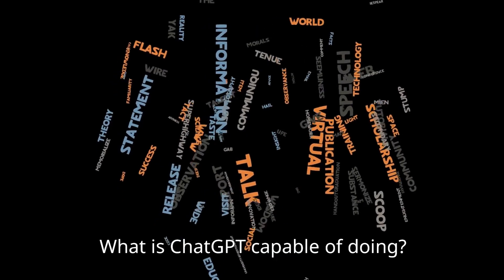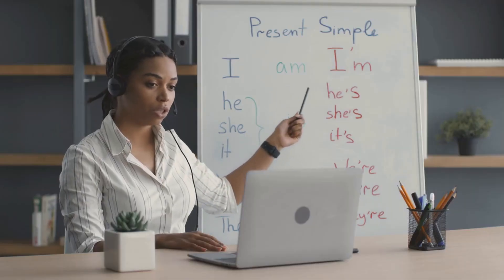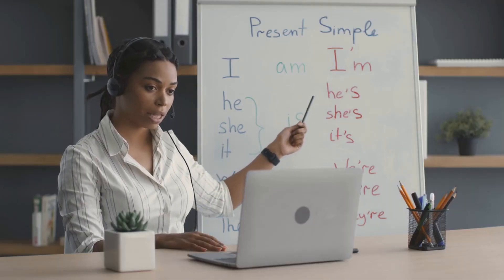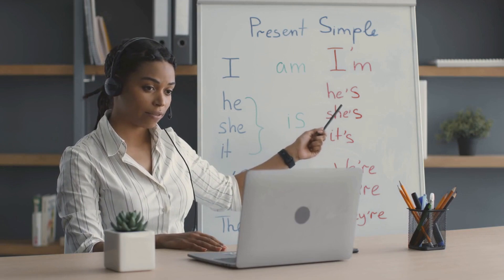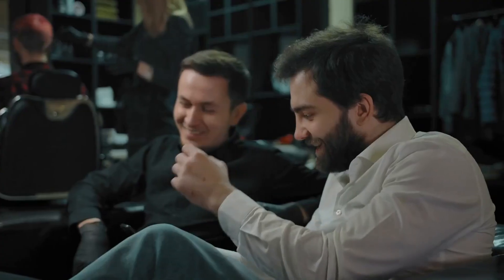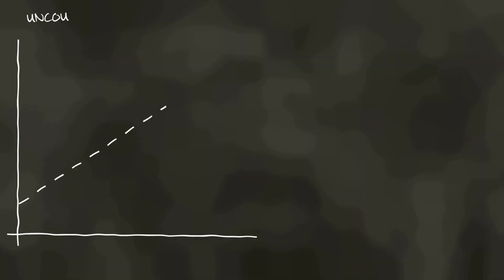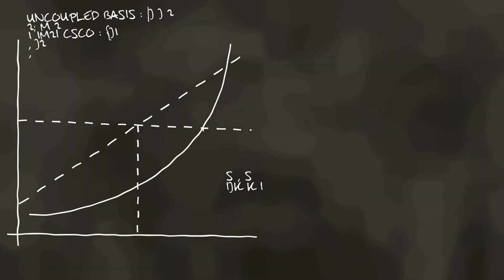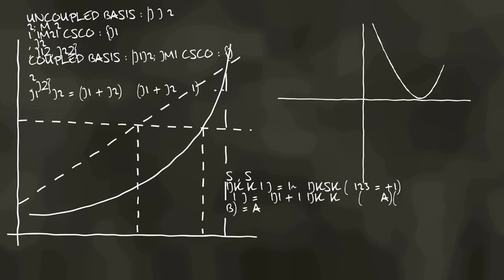What is ChatGPT capable of doing? As an AI assistant, it is able to understand and generate human-like text, which means that it can perform a wide range of language-based tasks. Some examples include answering questions: it can understand and respond to questions about a wide range of topics, including general knowledge, mathematics, science, and more.